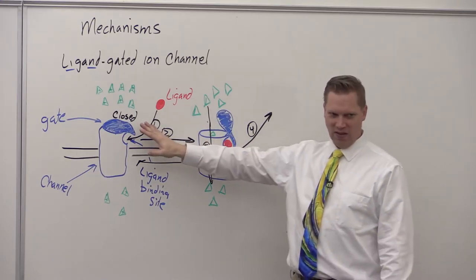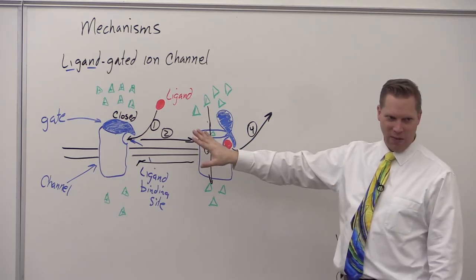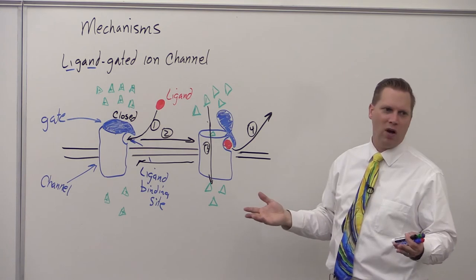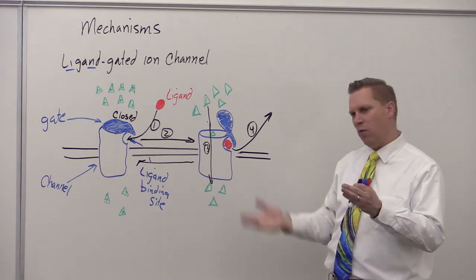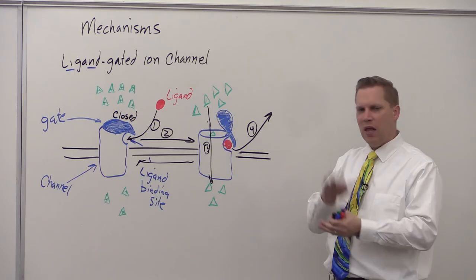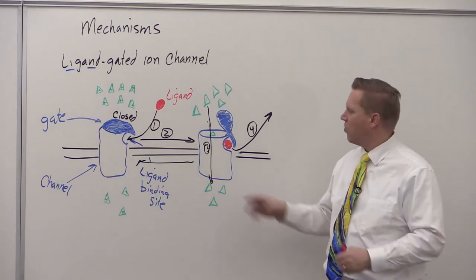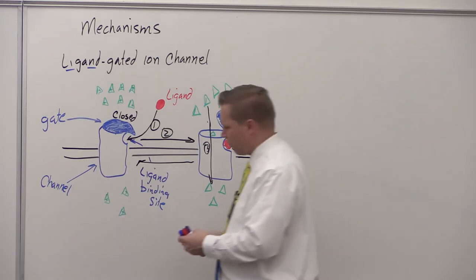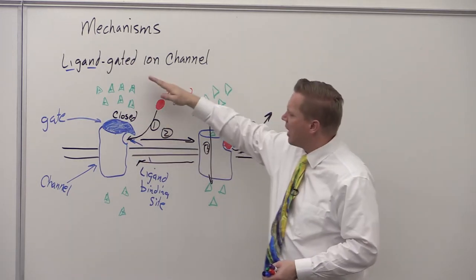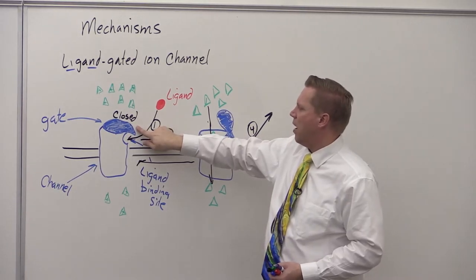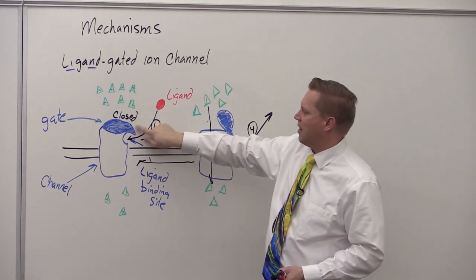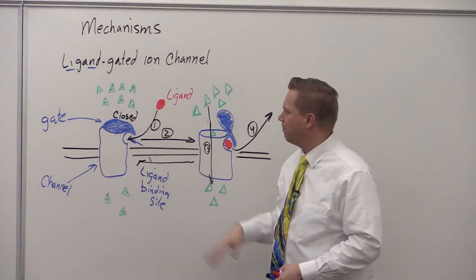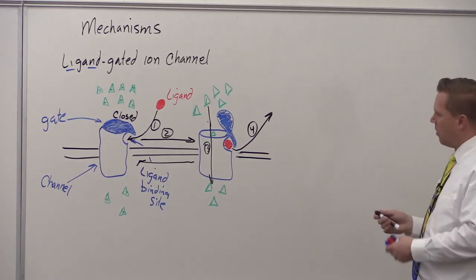Other gating mechanisms work very similarly. For voltage gating, instead of a ligand, there'd be some kind of charge — when there's a positive charge inside the cell, the channel would open; when the cell returns to negative charge, it closes. For mechanical gating, instead of a ligand, there would be some kind of fiber that physically pulls down or opens the channel.